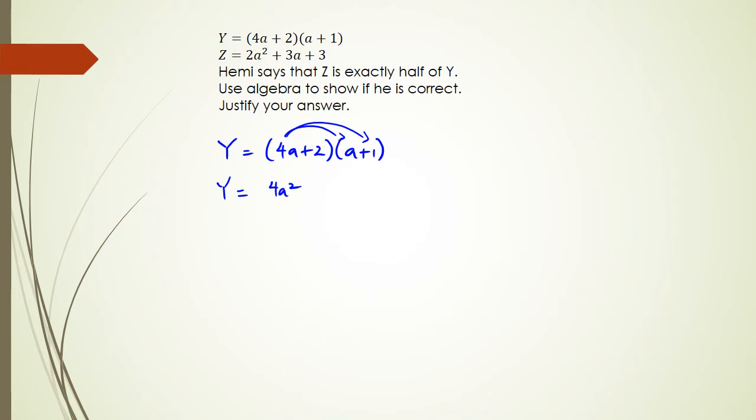4a times 1 is 4a, 2 times a is 2a, and 2 times 1 is 2. So Y then simplifies to be 4a squared plus 6a plus 2.